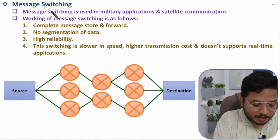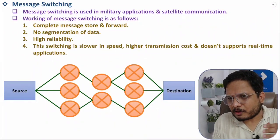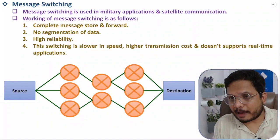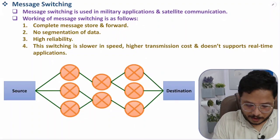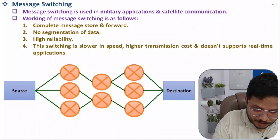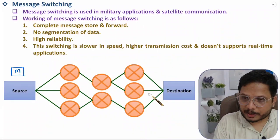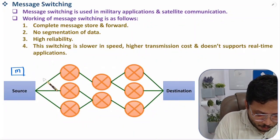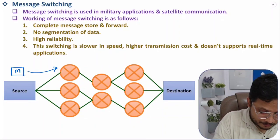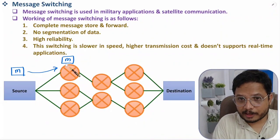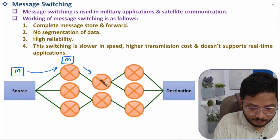The last category is message switching, used in military applications and satellite communication — not for commercial applications. It works based on complete message store-and-forward. There is no fragmentation of the message as it propagates. The complete message goes to a router, is stored there entirely, then the router decides to which next router to forward it, and it is stored there again.